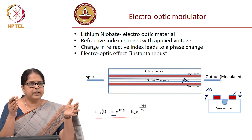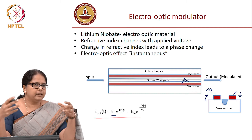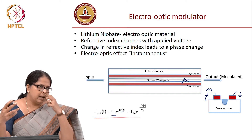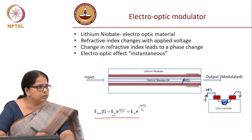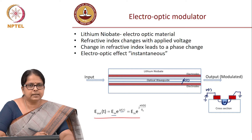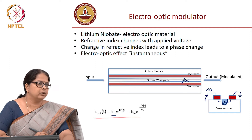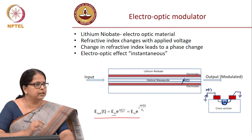Typically these electro-optic modulators are a few centimeters long — 3 or 4 centimeters — and they come in a packaged version where the light is guided through a waveguide. We discussed how an electric field can influence this light through the electro-optic effect. We are not getting into the details; we are only talking about the system-level description of the electro-optic modulator.